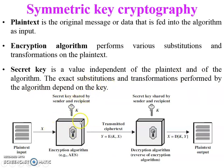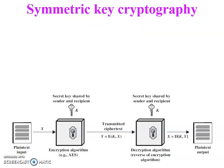The second element is the encryption algorithm. It performs various substitutions and transformations on the plain text to convert it into an unreadable format — that is, plain text is converted into cipher text. The third element is the secret key, which is a value independent of the plain text and the algorithm.